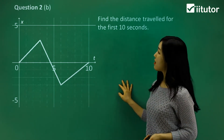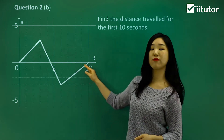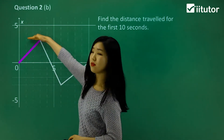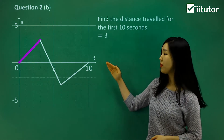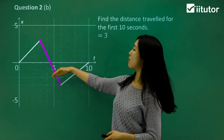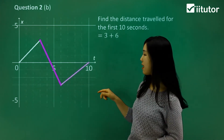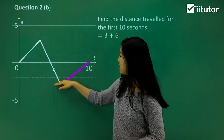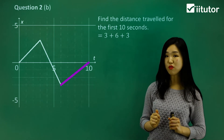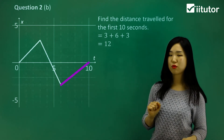Find the distance travelled for the first 10 seconds, from 0 to 10. For the first part, we travelled from 0 up to 3 — that's approximately 3. Now this part: the displacement goes from 3 down to negative 3, so the total distance between 3 and negative 3 is 6. And the final part, it's travelled from negative 3 back to 0, so the distance is 3. We always make sure everything is positive because it's distance travelled. So 3 plus 6 plus 3 equals 12 — that's the distance travelled in the first 10 seconds.